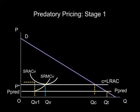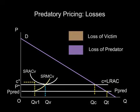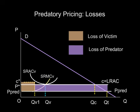Total output increases to OQC. However, the victim's output falls to OQV1, as it minimizes its losses where marginal cost equals the new marginal revenue at P-Pred for this price-taking small firm. The predator's output correspondingly increases to QV1QT. These losses are shown on the diagram. The small firm is facing a price of P-Pred, but its average cost in supplying its loss-minimizing output of OQV1 is OC-star. The overall loss is thus shown by the brown shaded area.